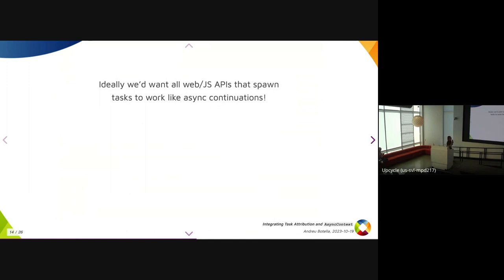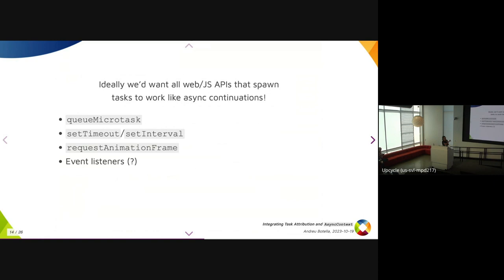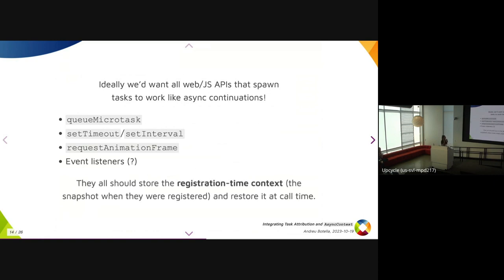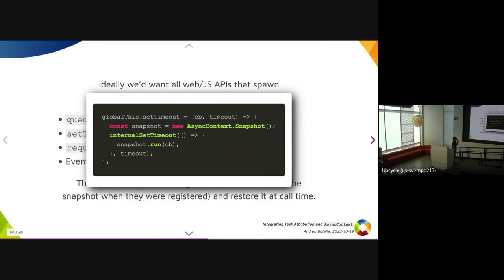Ideally, all Web and JavaScript APIs that spawn tasks should work similarly. Things like queueMicrotask, setTimeout, requestAnimationFrame, and event listeners — though event listeners are an open question we'll see later — should store a registration-time context snapshot when called, which gets restored at call time. Here's a JavaScript implementation: you create an AsyncContext.Snapshot, have an internal API do the actual timeout, and inside that you run the callback within the snapshot.